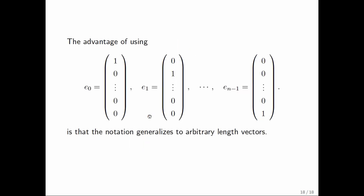Now what is the advantage of using e sub zero through e sub n minus one? In other words, what's the advantage of our notation over the one that you have seen in physics? Well, we can talk about unit basis vectors now of arbitrary size, while if you use the notation that physics uses, you'll run out of letters in a hurry.